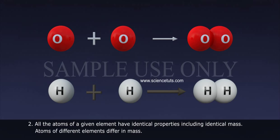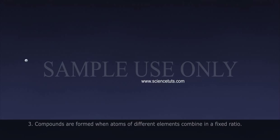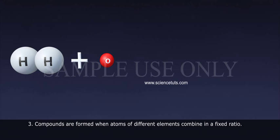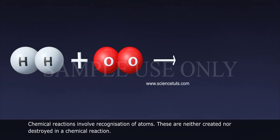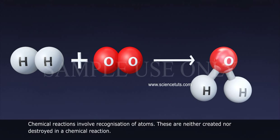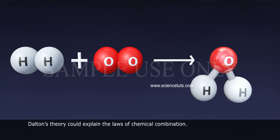Atoms of different elements differ in mass. 3. Compounds are formed when atoms of different elements combine in a fixed ratio. 4. Chemical reactions involve reorganization of atoms. These are neither created nor destroyed in a chemical reaction. Dalton's theory could explain the laws of chemical combination.